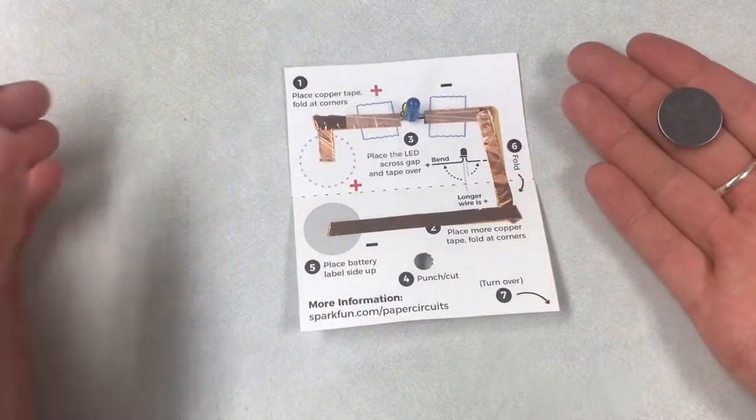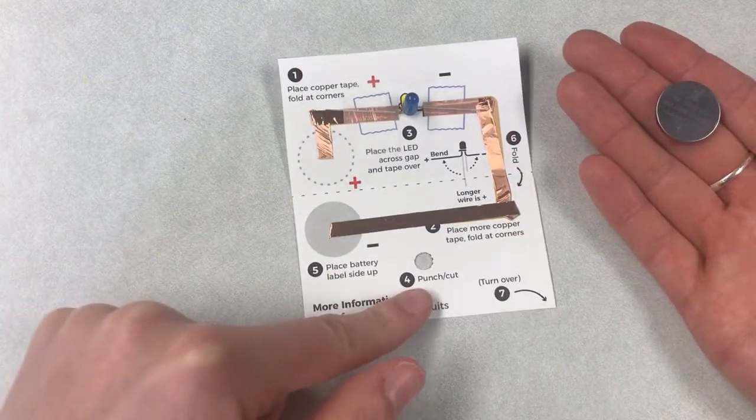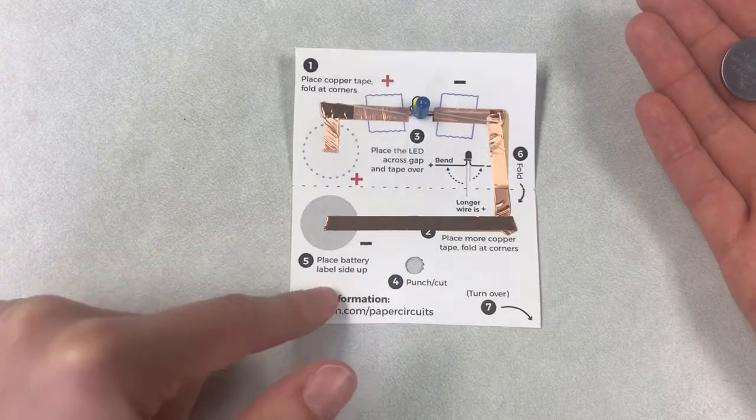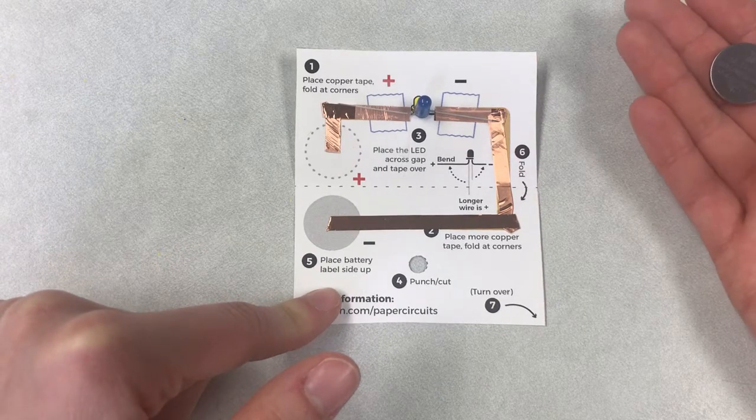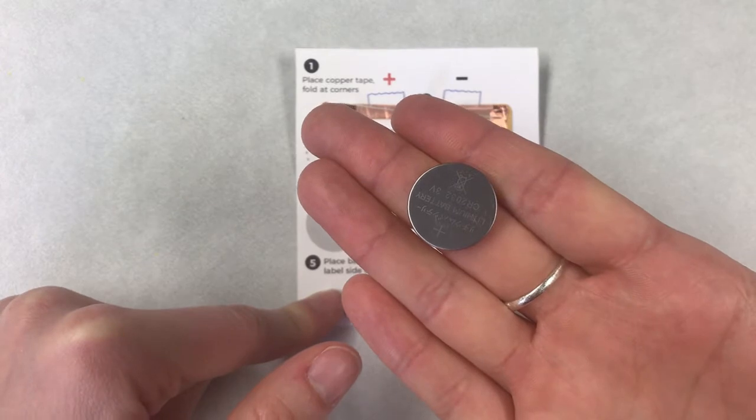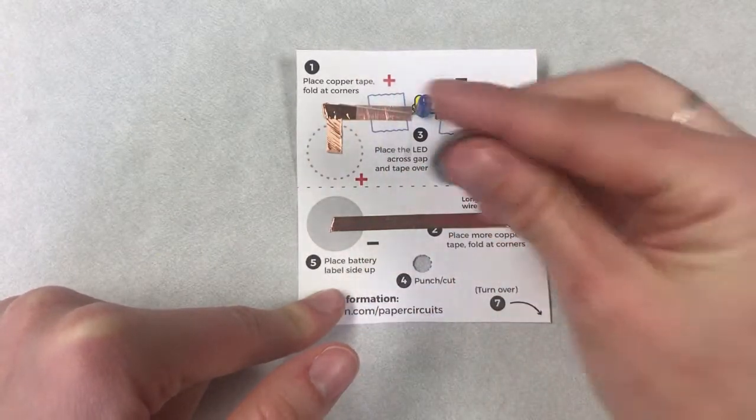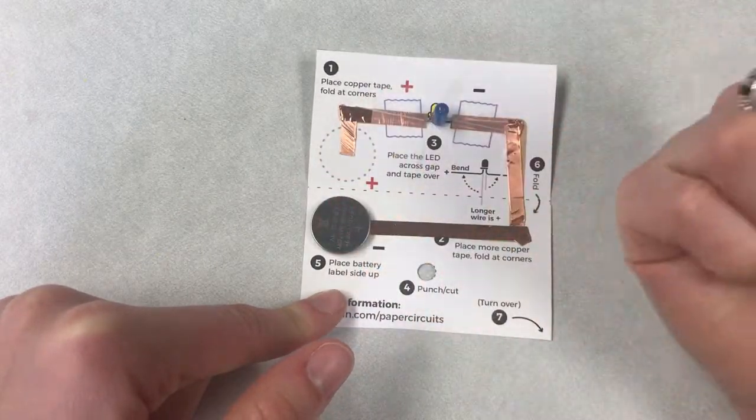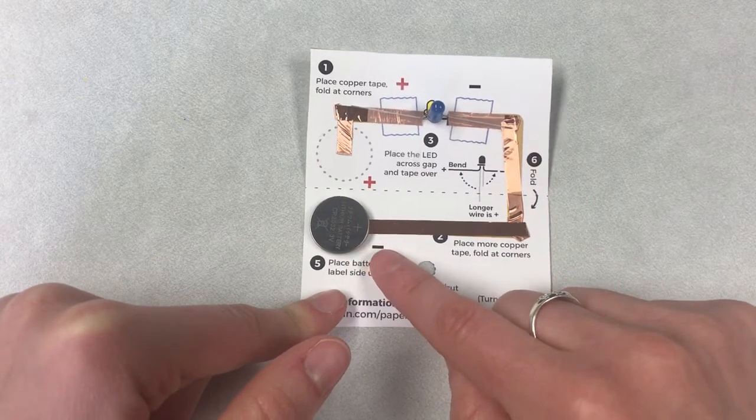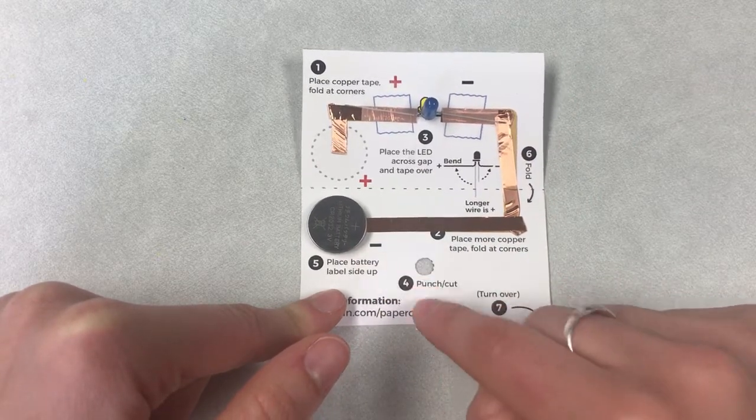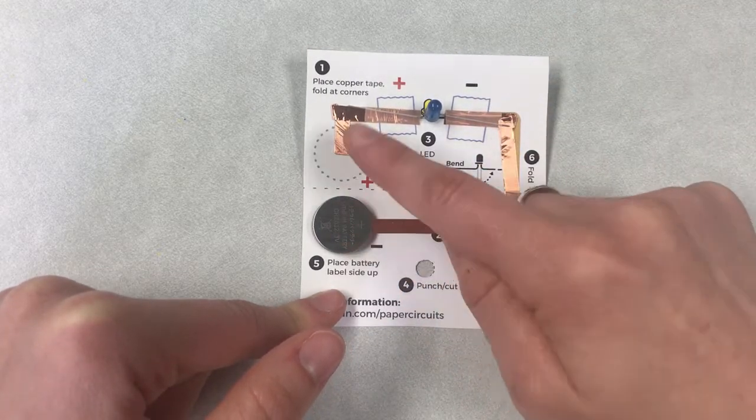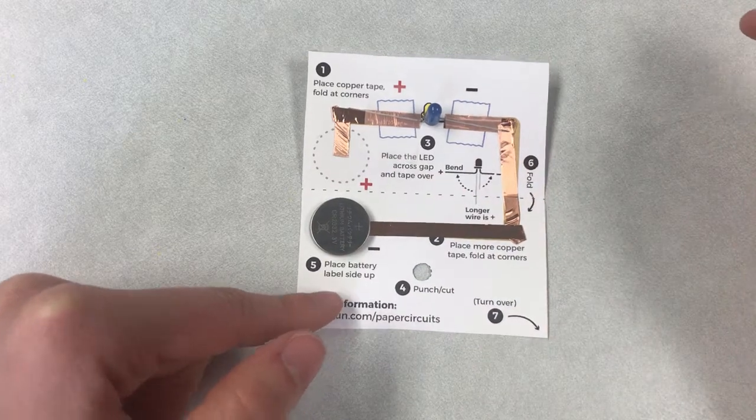Now it says step number four, punch your hole, but that's already done for you. Step number five, place battery label side up. The side that has the label is the positive side. So we want to put that one facing up so that the back of the battery, the negative sign, is touching this part of the card. And then when we fold it, the positive sign is going to be touching over here.